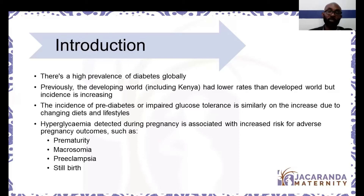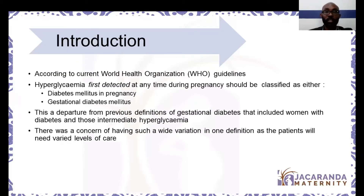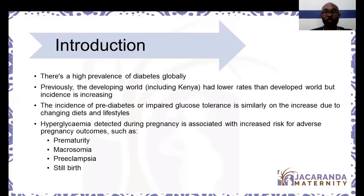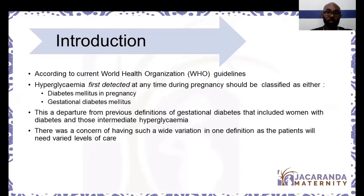To give you some rough statistics from WHO: in the 1980s, we had about 100 million cases of diabetes globally; now we have about 400 million. Because of this increase in incidence, it has become quite important that we identify and manage high blood sugar or hyperglycemia. When detected during pregnancy, hyperglycemia is associated with an increased risk for adverse outcomes, including prematurity, macrosomia — which is big babies — preeclampsia, and even stillbirth.